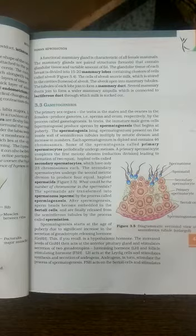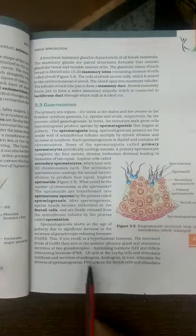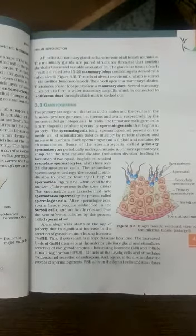GnRH stimulates the secretion of two gonadotropins: LH and FSH. LH acts on the Leydig cells—remember, LH acts on Leydig cells.